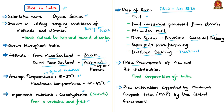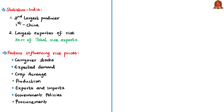Public procurement of rice and its distribution to citizens is carried out by the Food Corporation of India. Rice cultivation is supported through Minimum Support Prices (MSP) by the central government. India is the second largest producer of rice in the world after China, which is the largest. India is the largest exporter of rice in the world, accounting for 30.1% of total rice exports.